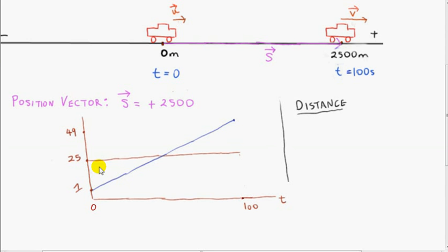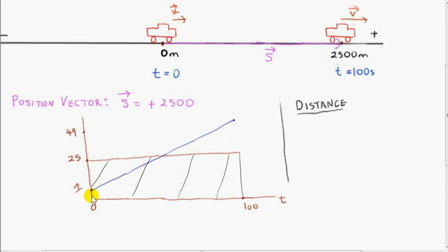The distance travelled by the car under the first scenario, travelling with a constant speed of 25 meters per second, is got by getting this area. This area is in the shape of a rectangle, so it's easy to get the area — we just multiply the two sides together. This side is 25 meters and this side is 100 seconds, so 25 times 100 gives us 2500 meters.